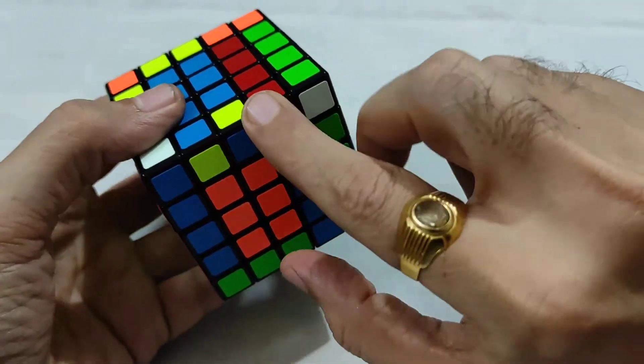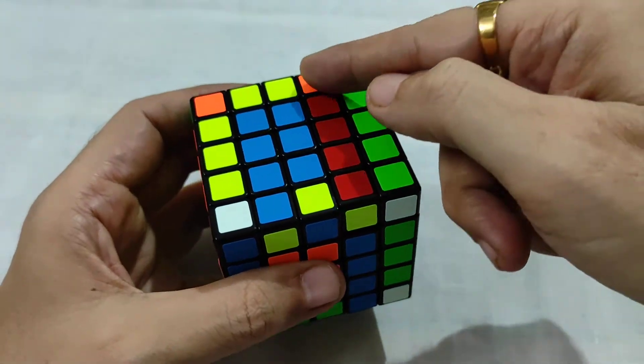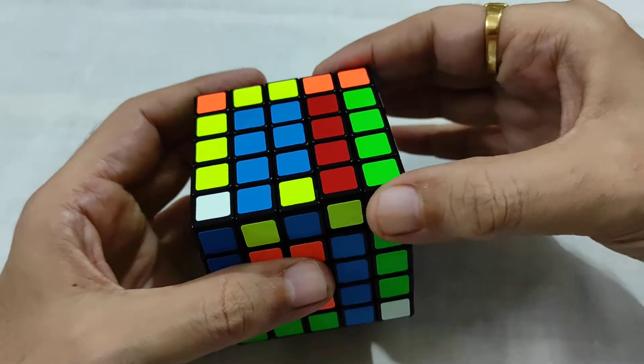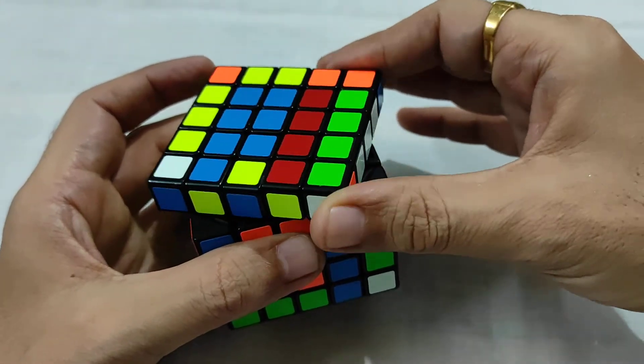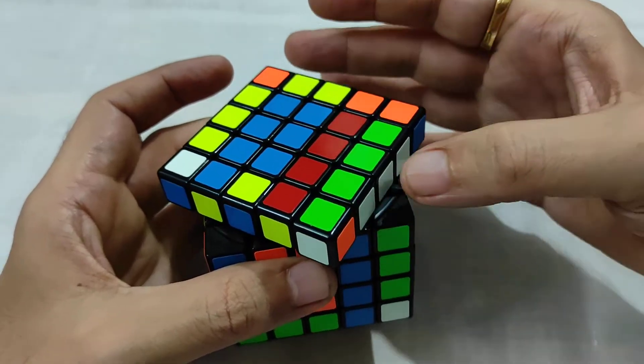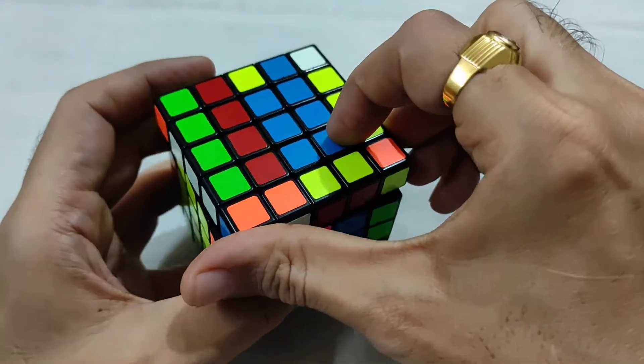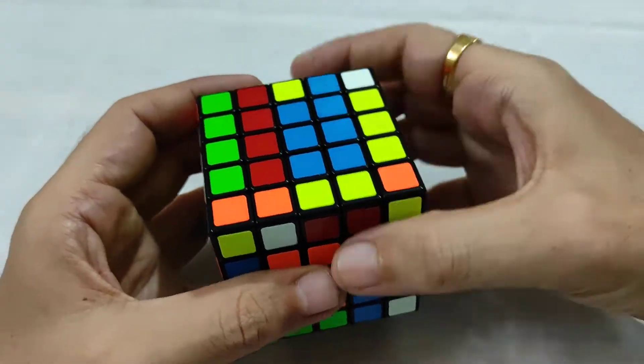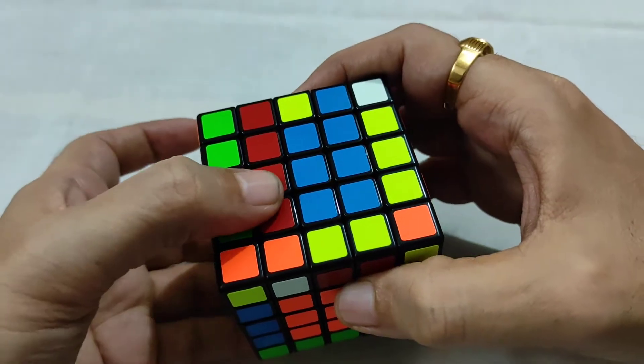R prime, only middle layer. So since we moved this, we have to turn this two times, so 2U. Then left, so L.